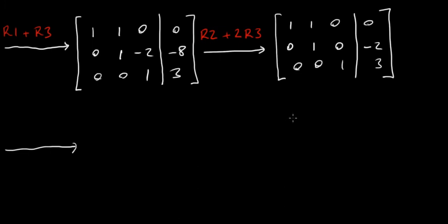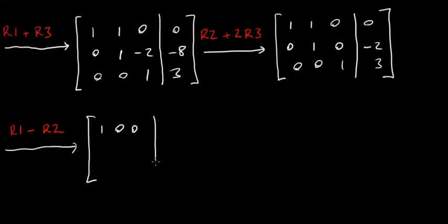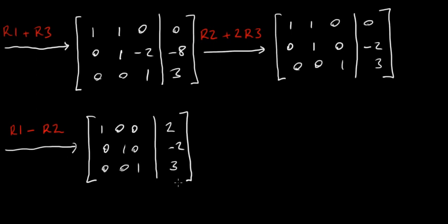There's one more operation: I just need to turn this one entry into a zero. I'm going to take row one and subtract row two. That gives: 1, 0, 0; and 0 minus (minus 2) = plus 2. Row two is unchanged: 0, 1, minus 2 becomes 0, 1, 0, minus 2. Row three: 0, 0, 1, 3.